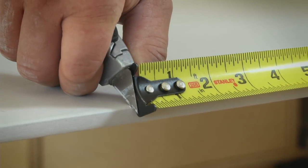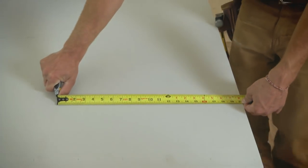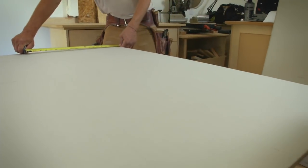Starting at the edge, pull both hands across the sheet, scoring the paper face of the drywall as you move.